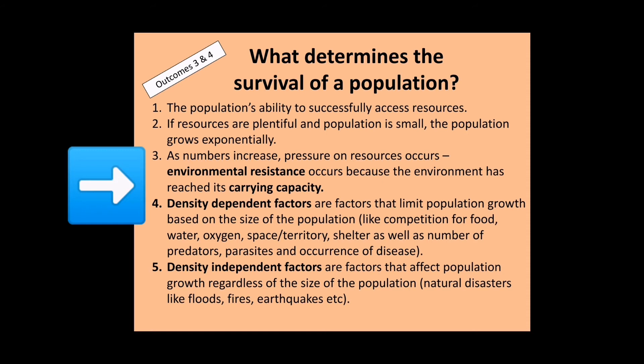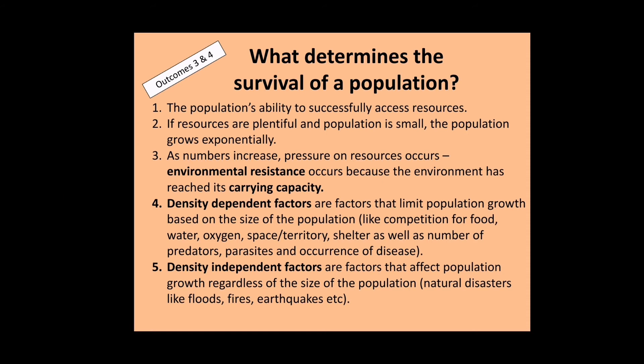Density dependent factors are listed at number four. At number five, it talks about density independent factors — regardless of the size of a population, certain things like a fire, flood, or natural disaster can also reduce the population, no matter how big or small they are. So if DJ's farm had a huge fire, those zebra would be done for, regardless of how many there were.